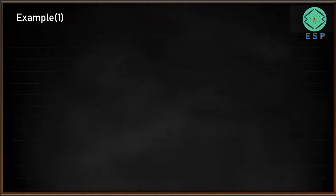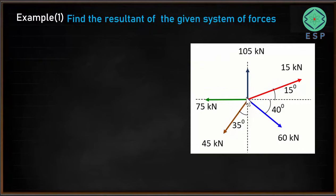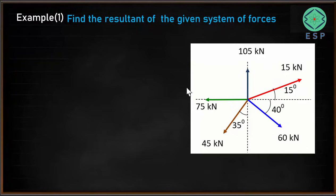Let's consider an example based on a system of coplanar concurrent forces. We have a force of 15 kN making an angle of 15 degrees with the x-axis, a force of 105 kN acting in the positive direction of the y-axis, a force of 75 kN acting in the negative direction of the x-axis, a force of 45 kN making 35 degrees with the negative direction of the y-axis, and a force of 60 kN making an angle of 40 degrees with the positive direction of the x-axis. We need to find the resultant of this system of coplanar concurrent forces, since all these forces are in the same plane and pass through the same common point.